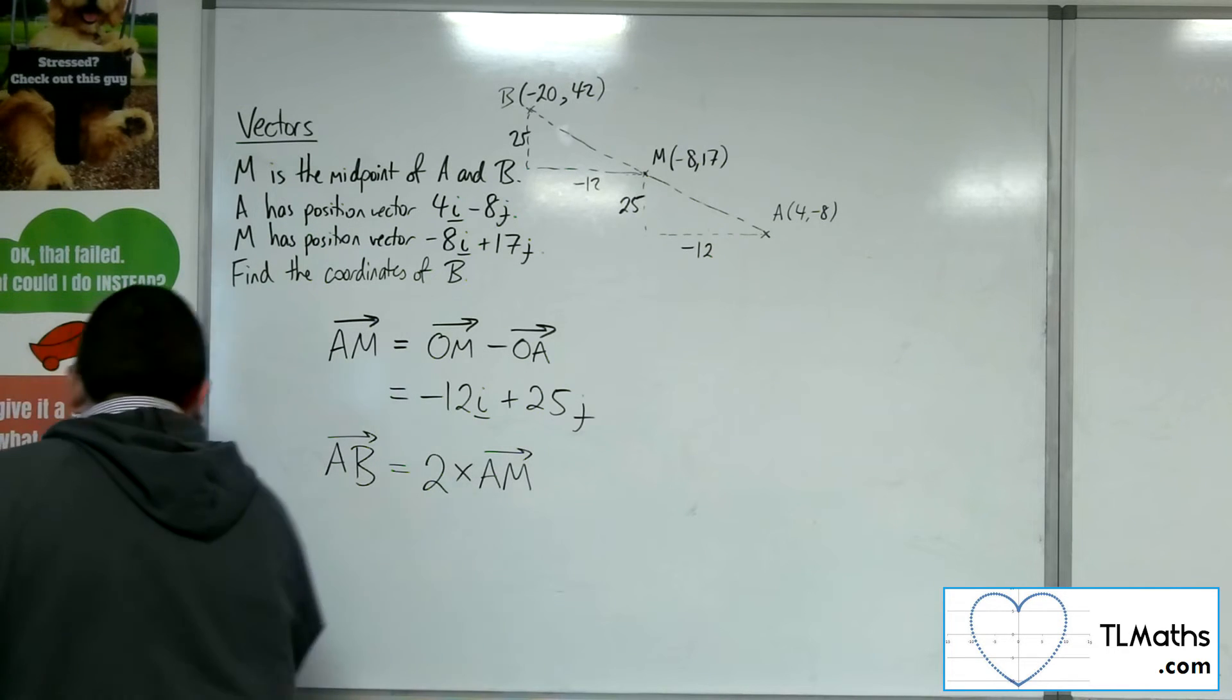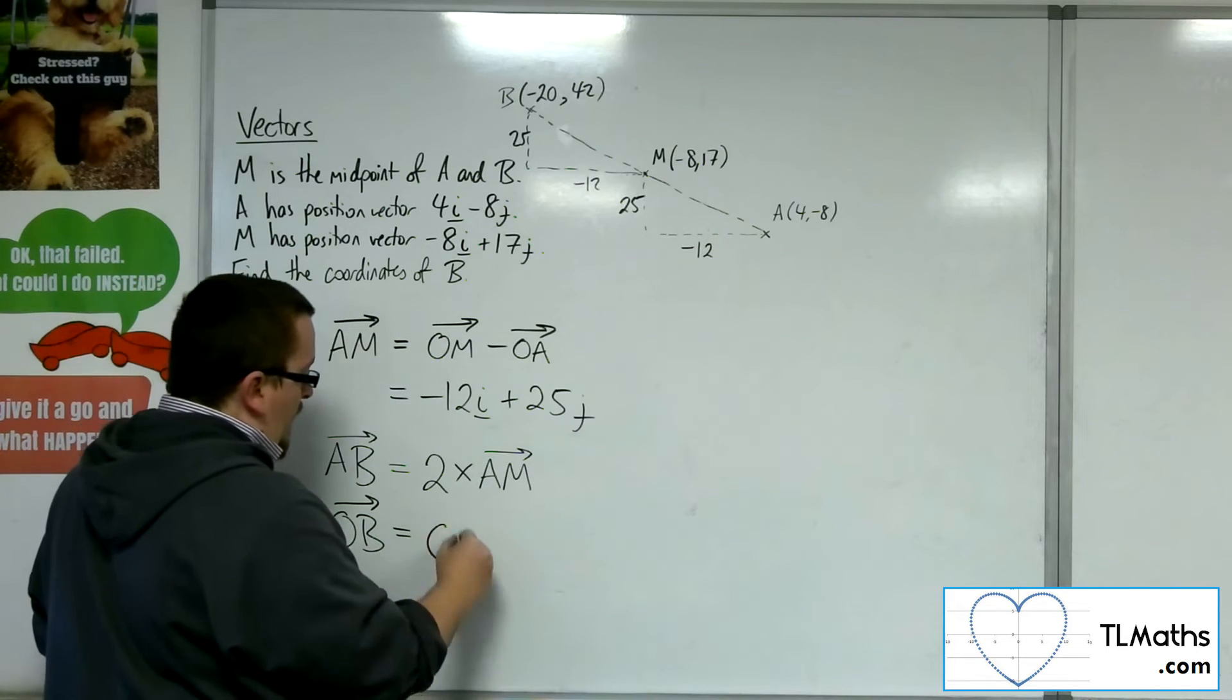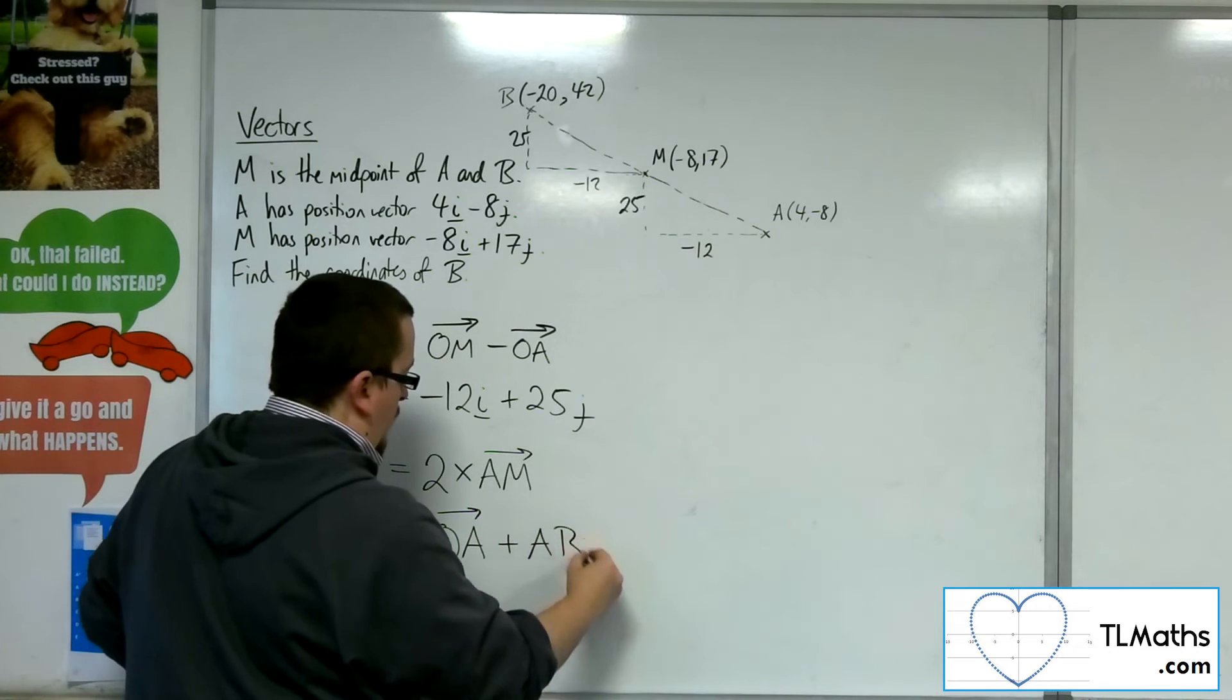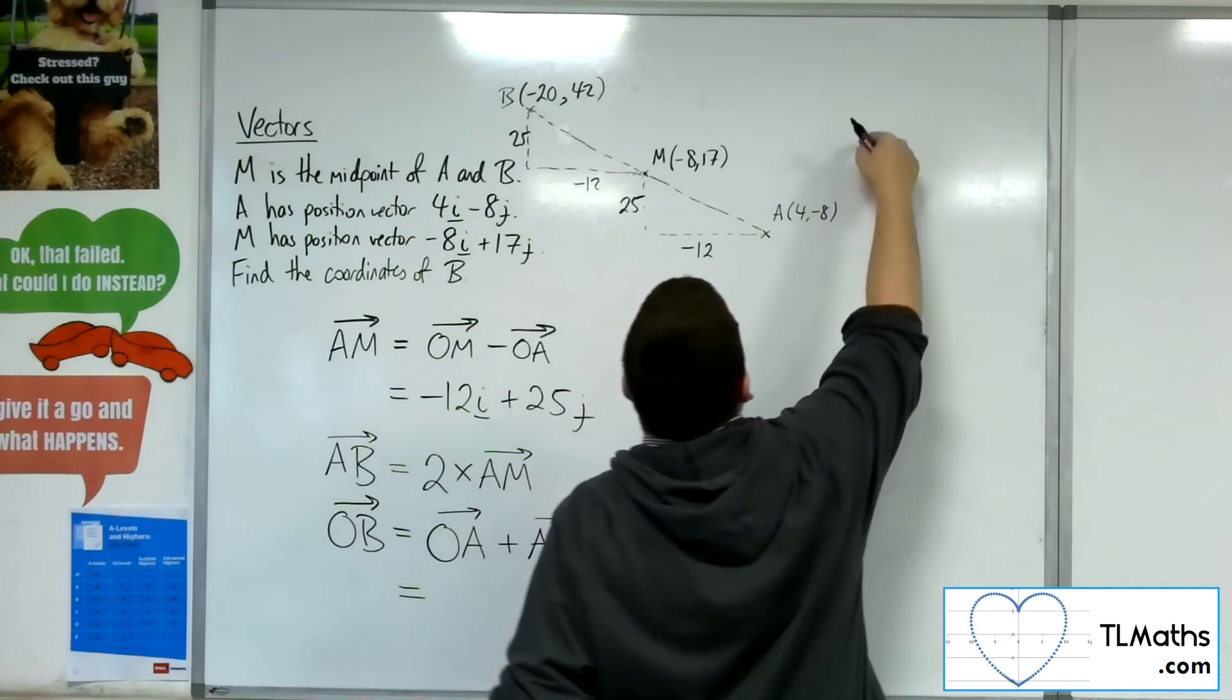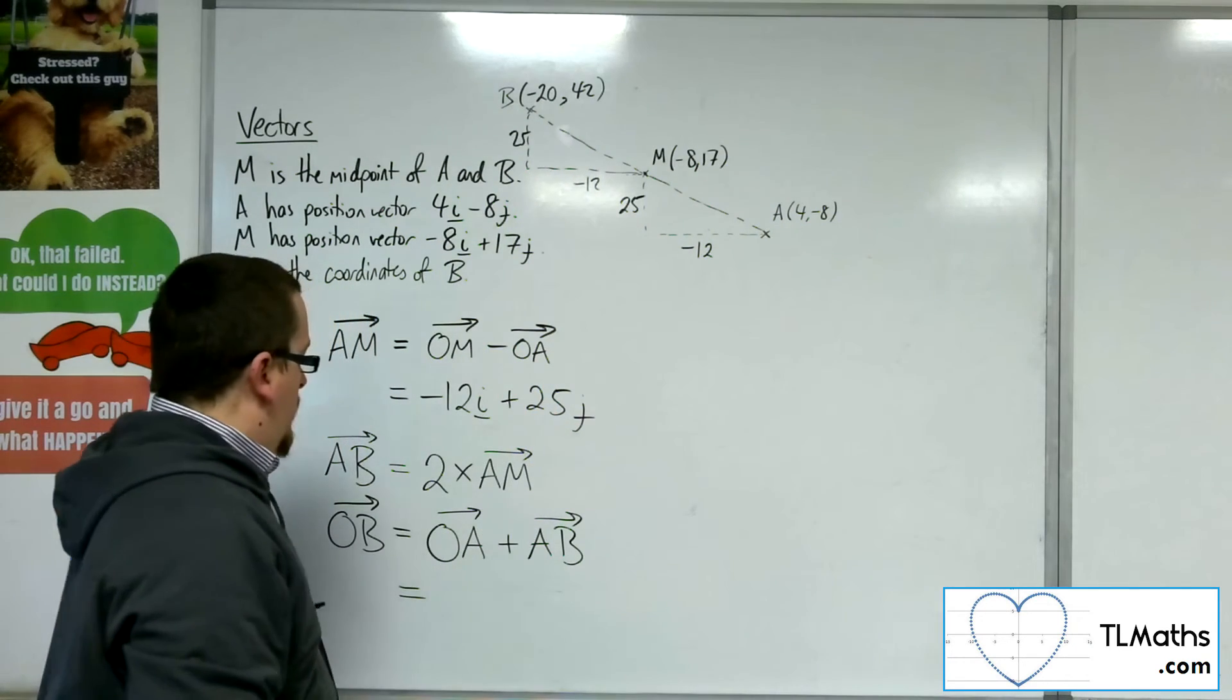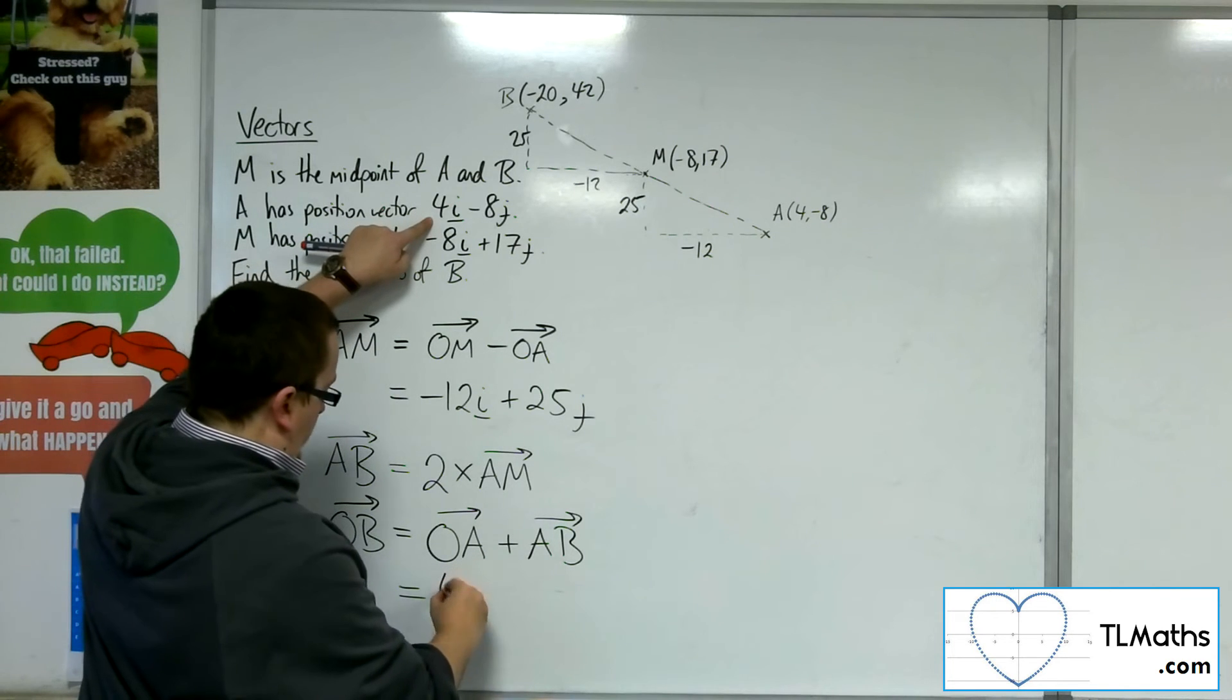So the position vector of B, I can get from the origin to A, and then add on AB. So I get from the origin, sum up here, get on to A, and then I know how to get from A to B. So that would be, well, I've got OA, which is the 4i minus 8j.